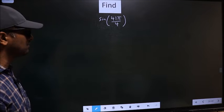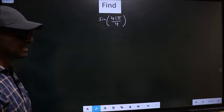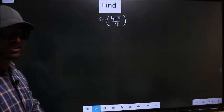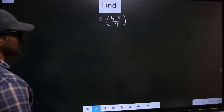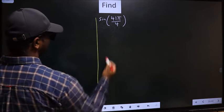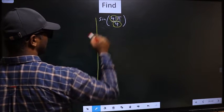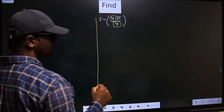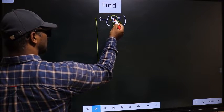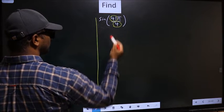Find sin 41π by 4. To find this, we should follow this method. See, in the denominator we have 4, in the numerator we have 41. Now you should check, 41 is close to which multiple of 4.